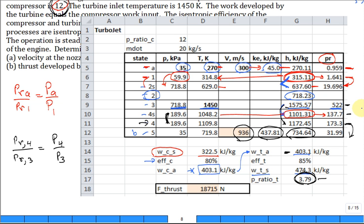And then this line, I had to scroll down to compute the forward thrust of the engine. It was just my 20 kilograms per second times the difference in the speeds 936 minus 300. Look good? Yes, sir. Okay, I'm out of time.